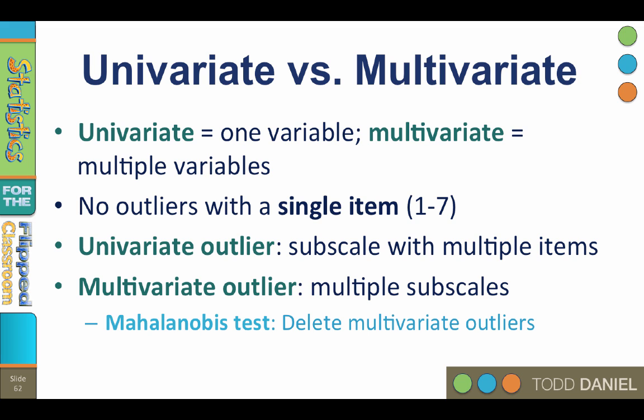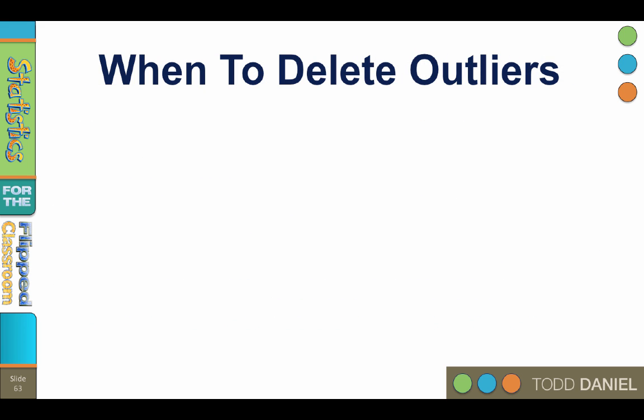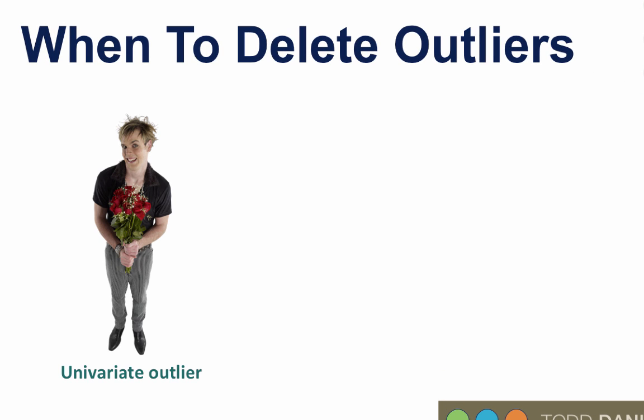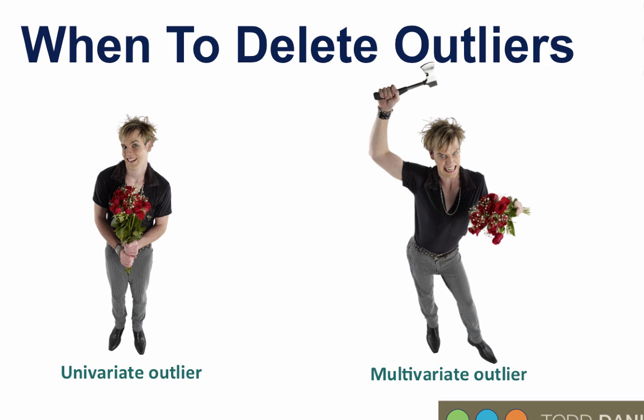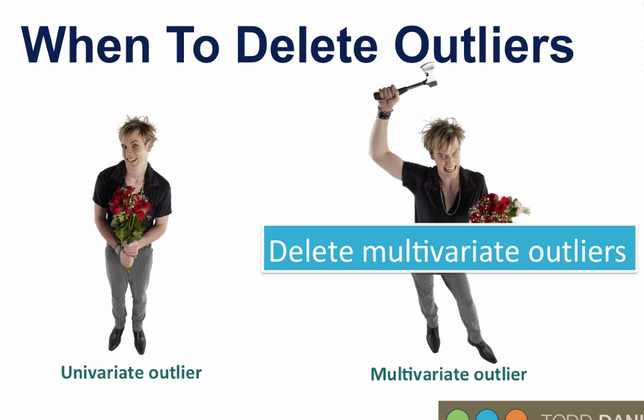A multivariate outlier is an outlier on every subscale. Multivariate outliers occur when someone is answering survey questions facetiously or only using the extreme ends of the responses. We identify multivariate outliers using a Mahalanobis test, which can be done in SPSS. Think of multivariate outliers like this: if you have a friend who is funny, quirky, a little crazy in one way, then you have an eccentric, idiosyncratic friend who is probably delightfully odd — keep that friend. But if you have a friend who's crazy in every way, then you need a new friend. We keep univariate outliers who are odd in only one way, but we remove multivariate outliers who are odd in all kinds of ways, as they tend to mess up the analysis.